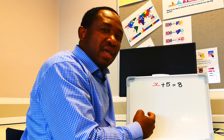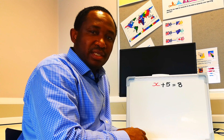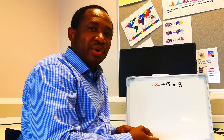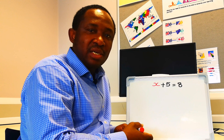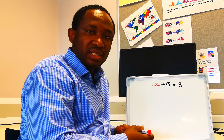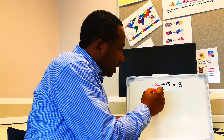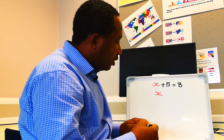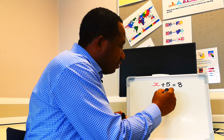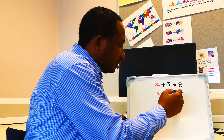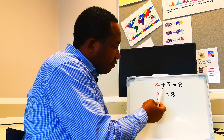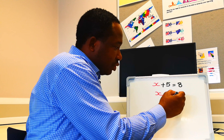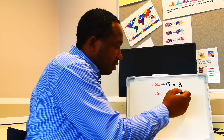The aim here is to isolate x. x will remain on one side of the equals sign. We are going to keep x on this side, and on the other side we have 8. The 5 will move across the equal sign and it will become minus 5.